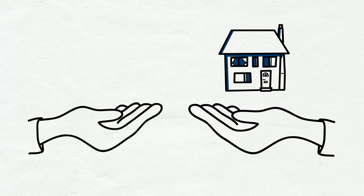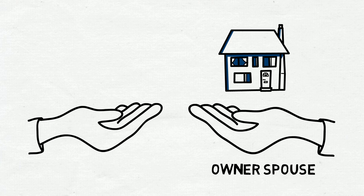The spouse who legally owns the home is referred to as the owner spouse, while the spouse not on title is the dower spouse.